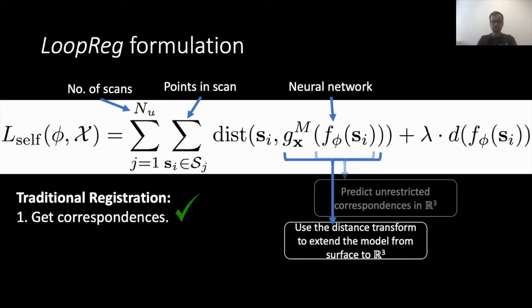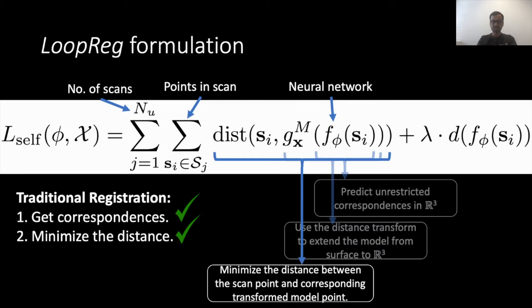The corresponding point is transformed according to the learnable model parameters X. In the case of SMPL, these would be pose, shape and freeform deformations. We minimize the distance between the original scan point and the transformed corresponding point.